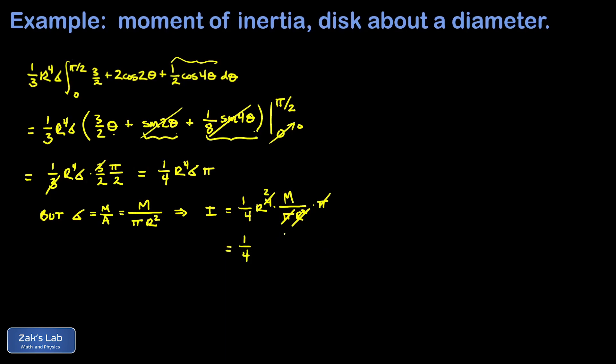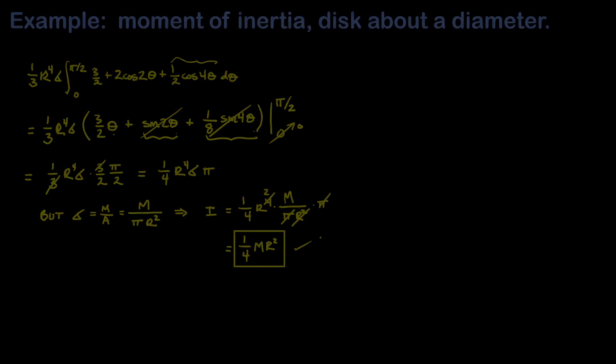The moment of inertia of a disk being flipped over its diameter is (1/4)MR². If you enjoyed this video or found it useful, check out another one by clicking the links, or click the Zach's Lab logo to explore dozens of physics and math playlists. Leave your questions, comments, and requests in the comments section and I'll get back to you within 24 hours. Thanks for watching Zach's Lab!